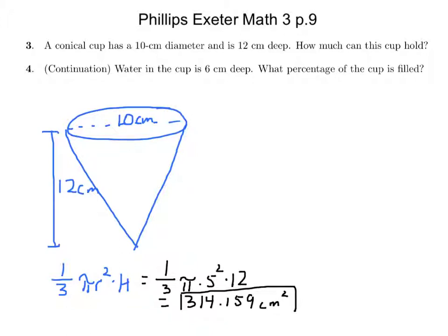Well, I guess if you look at what we have here, 1 third of 12 is 4. 4 times 25 is 100, so it's 100 times pi. That's where that came from. Makes sense.